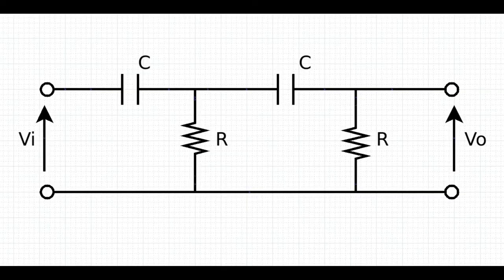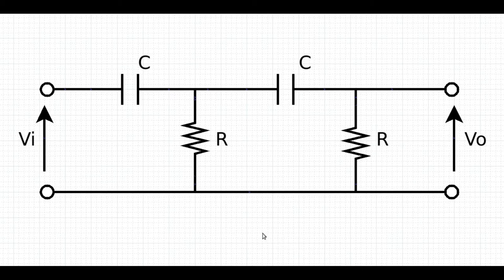Here is the schematic of the first of the two filters I show you in this video. It is a second-order passive RC high-pass filter. Its design is an extension of another filter we have seen in a previous episode, the first-order passive RC high-pass filter. It is in fact made out of two first-order filters in cascade.